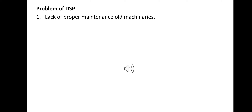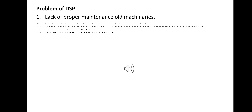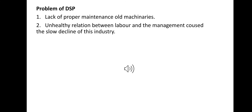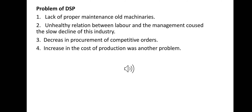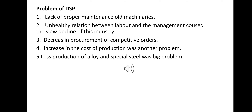Problems of DSP — Durgapur Steel Plant: first, lack of proper maintenance and old machines and machineries. Second, unhealthy relations between labor and management causing slow decline of the industry. Third, decrease in the procurement of competitive orders. Fourth, increase in the cost of production. Fifth, less production of alloy and special steel.